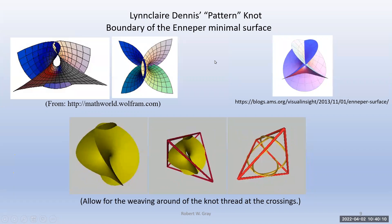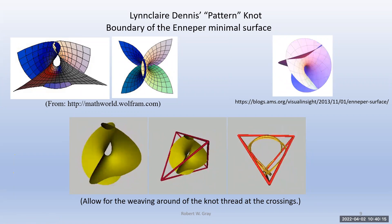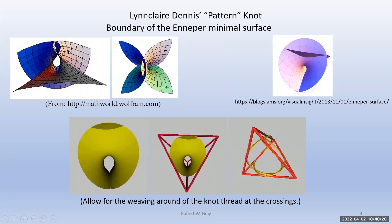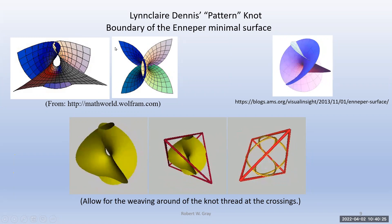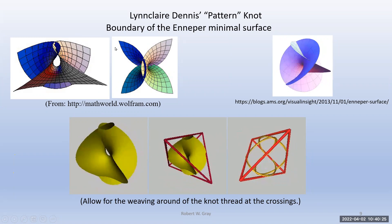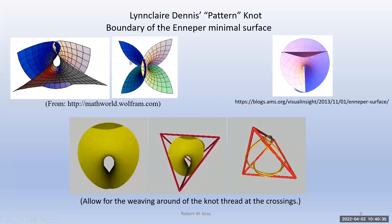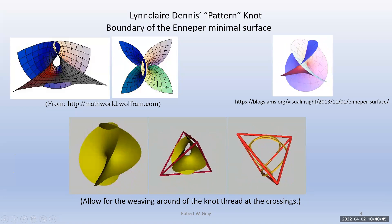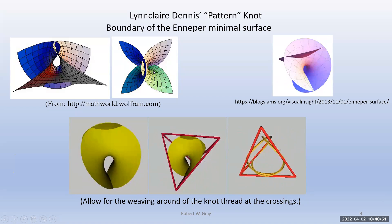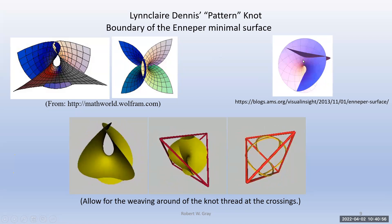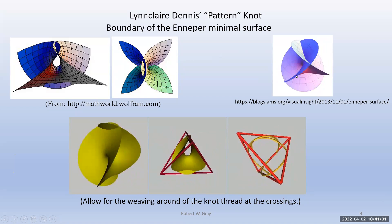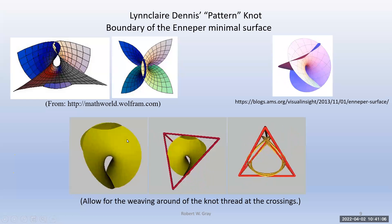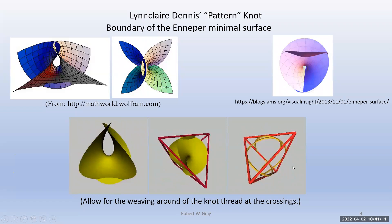I was looking at math websites and came across on the Wolfram website a minimal surface called the Enneper minimal surface. It reminded me of Linclair's knot on the tetrahedron, but with pointed edges. I thought: if I put a sphere around this and truncate it at the sphere surface, it would look like a certain form. That turned out to look just like the boundaries of Linclair's pattern knot, and the math confirms it matches up perfectly.